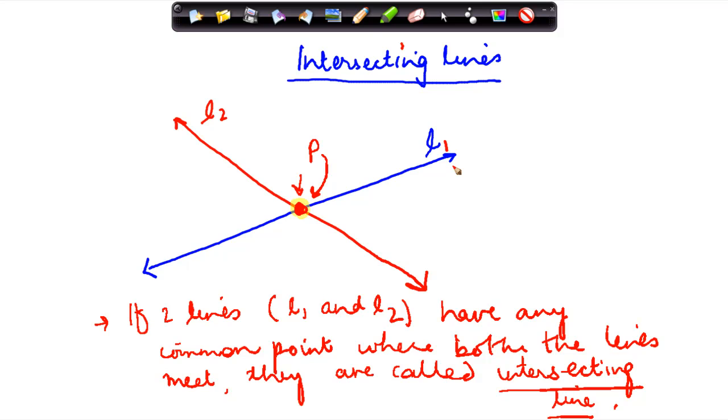Okay, let us understand the concept of intersecting lines. Now basically, if you see this particular example, we have shown that there are two lines. One is l1 which is going like this, and the other line is l2 which is moving like this. Now when these two lines are made, these are basically intersecting each other at this common point. So let us say we call this point as P.